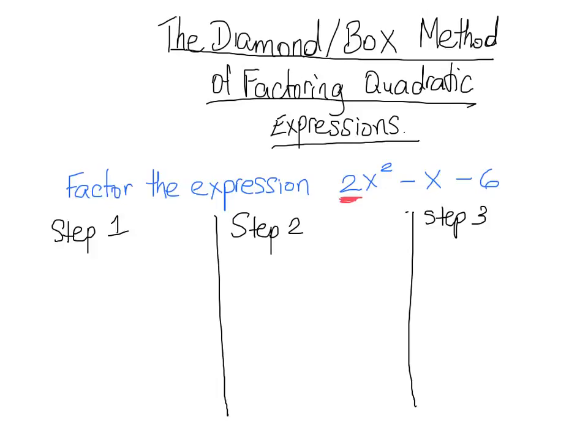The first step in the diamond box method is to draw a big X, otherwise known as our diamond. In our diamond at the top you are going to put the B value. At the bottom you'll put the A times C value. In this expression we have 2x squared minus 1x minus 6. So at the top of our diamond we can put that B value which is negative 1 and at the bottom we're going to put A times C so that's 2 times negative 6 which gives us negative 12.